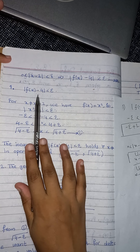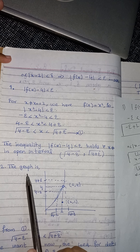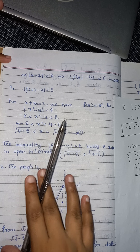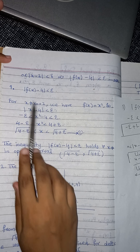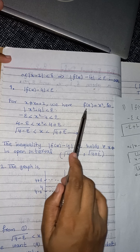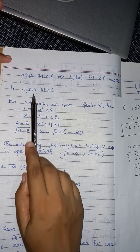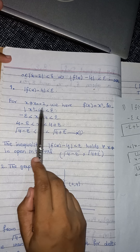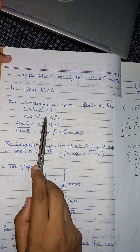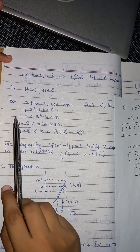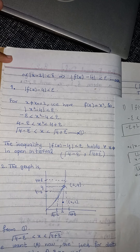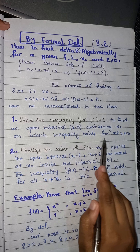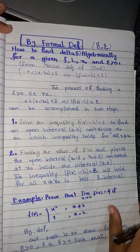As previously discussed, we first solve this inequality. There are two steps to find delta algebraically. For x not equal to 2, our function equals x squared, so we replace f(x) with x squared: |x² − 4| < epsilon. Opening the absolute value gives this inequality, and adding 4 gives another form. After taking the square root we get equation number one. This inequality holds for all x not equal to x naught in the open interval found from this step.